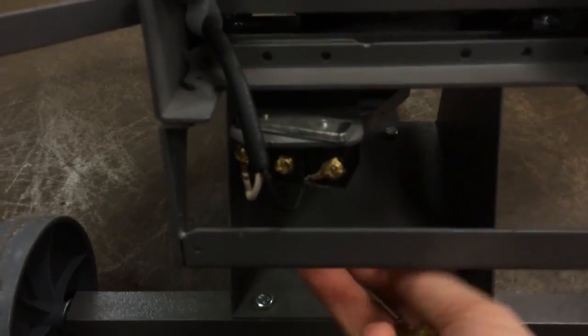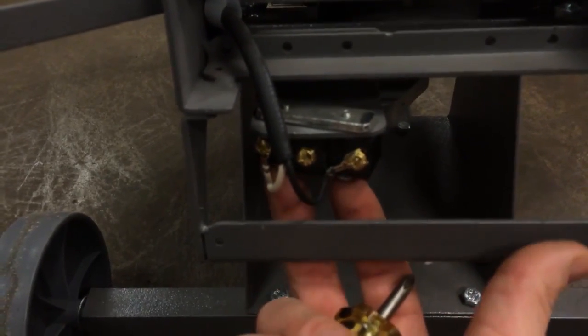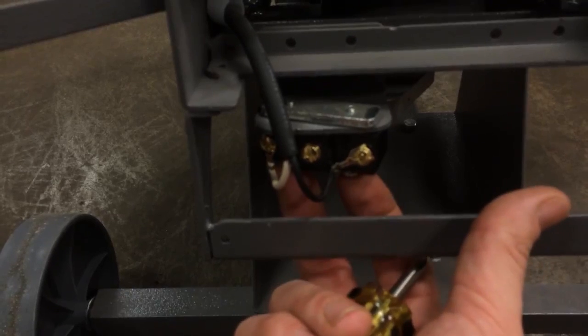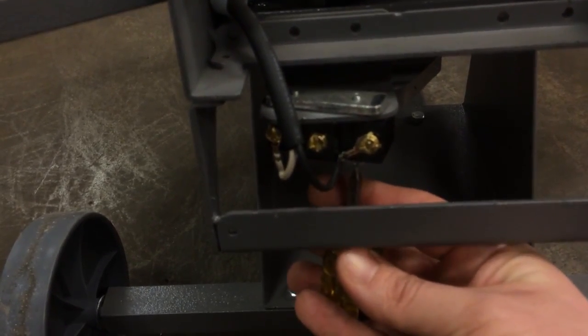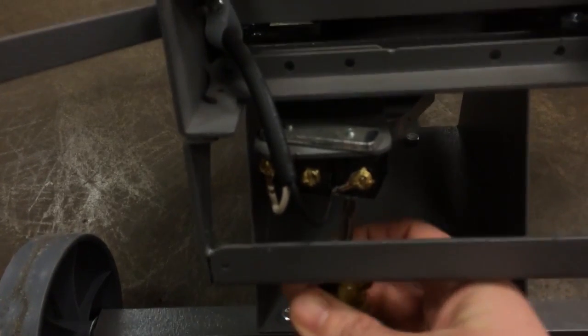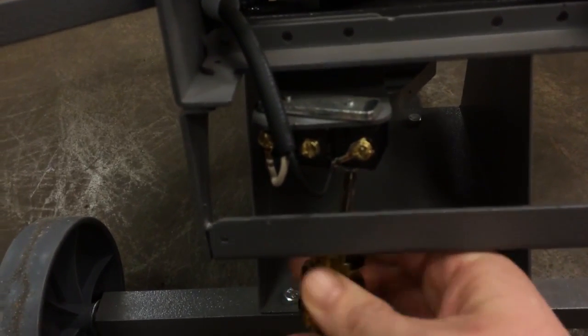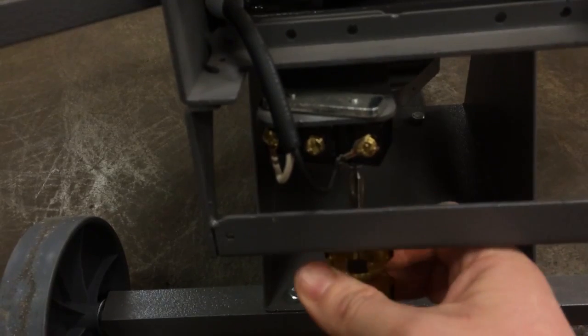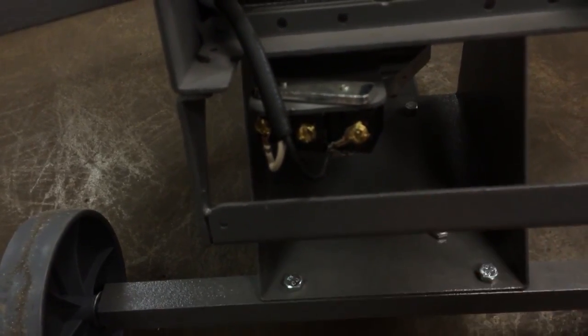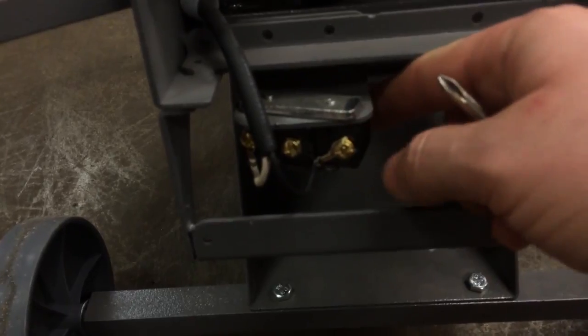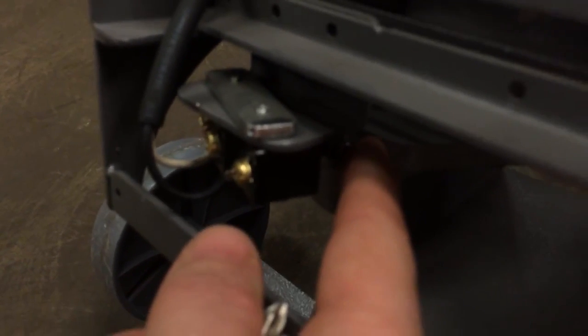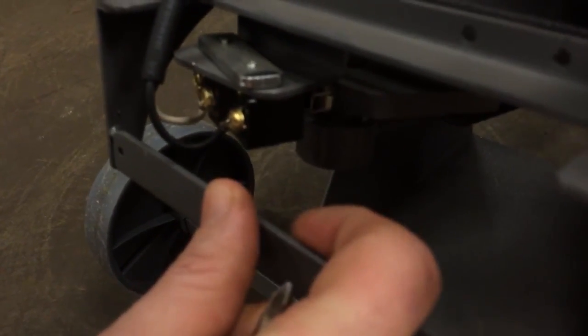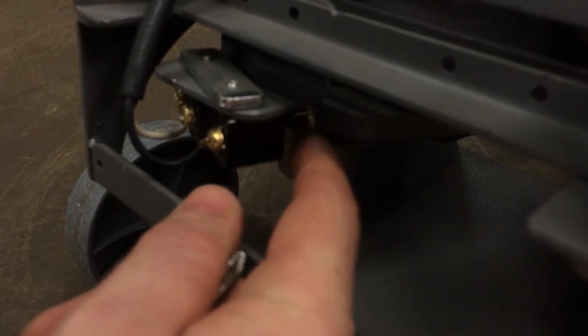But we're gonna go to adjust this limit switch right here. Now there's two Phillips head screws that hold that switch on from the bottom. I'm going to try to loosen only the right hand side one. That is the one that gives me movement or allows me to get movement.